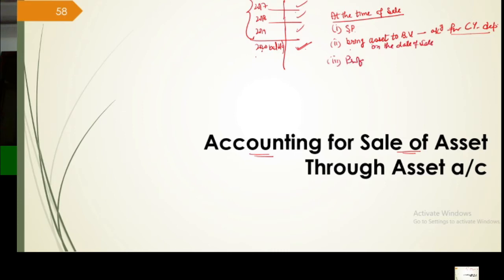Previous years' depreciation was already recorded each time, so asset is brought to book value using prior entries. Only the current year's depreciation entry is needed. Then we compare selling price with book value to find profit or loss on sale — and its recording is also done. So these are the three things we need to record.